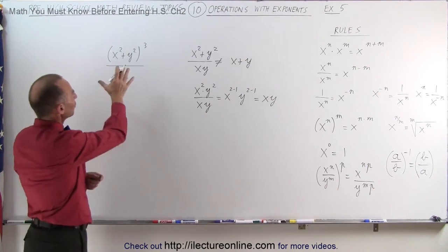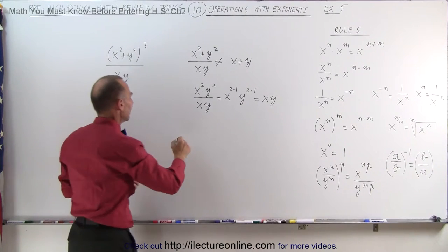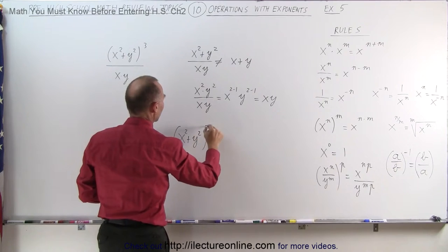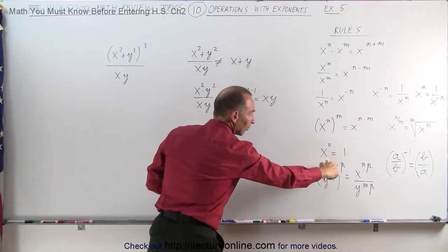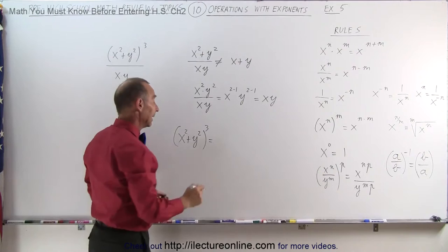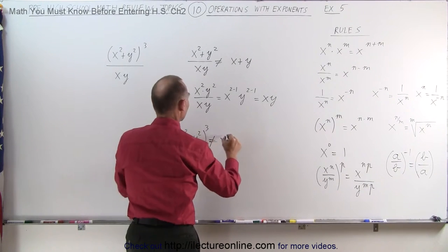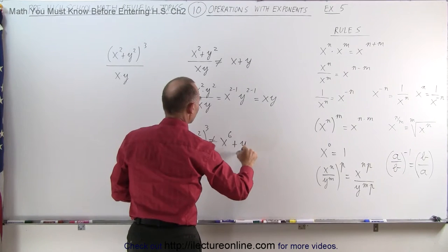Then you say, well, wait a minute, what about the numerator? Why can't I take x squared plus y squared and raise it to the third power like this? Because the rule right here, can I not just multiply exponents? And the answer is no, this is not equal to x to the 2 times 3, which is 6 power plus y to the 6 power.